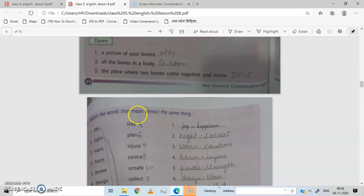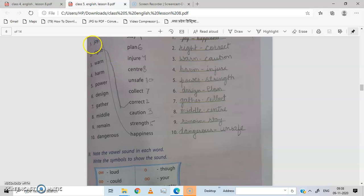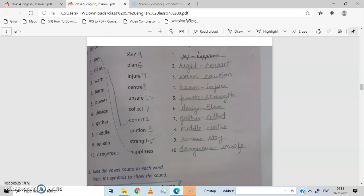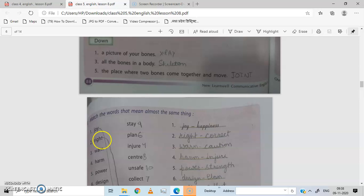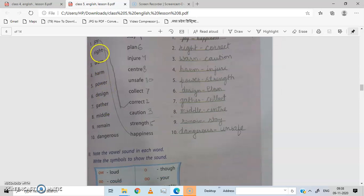Match the words that mean almost the same thing. First one, joy. You have to match whose meaning is same. Joy meaning happiness. The meaning of joy is happiness. Joy, khushi, happiness. Right, you are right. Right means correct. Number 2, correct. Right, correct.